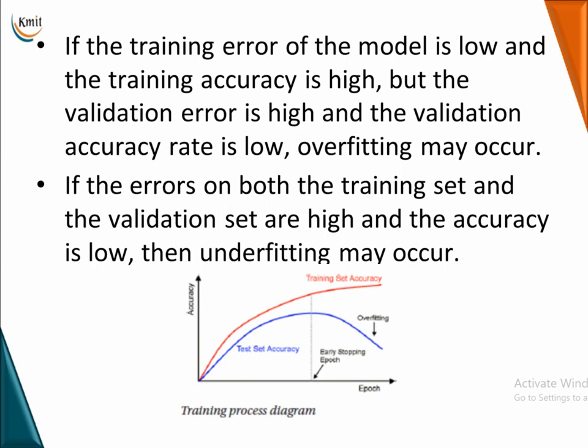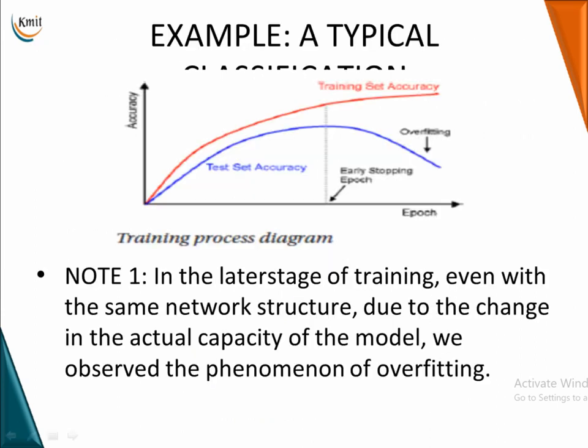If the training error of the model is low and the training accuracy is high, that is good — but if the validation error is high and the validation accuracy is low, then the model is overfitting. On the other hand, if the errors on both the training dataset and validation dataset are high and accuracy is low, then the model is underfitted.